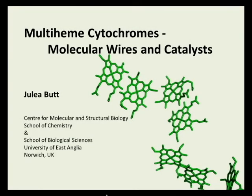Proteins containing more than one covalently bound heme are abundant in Shewanella oneidensis. Frequently the hemes are arranged in close proximity within or across proteins to form molecular wires like the one shown here. These wires allow electrons to cross long distances, but they can also terminate within the active site of an enzyme to allow the heme to play an essential role in catalysis.